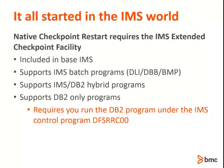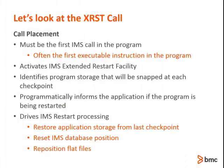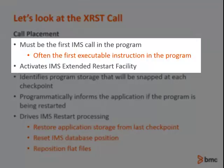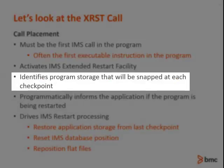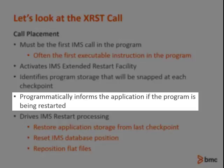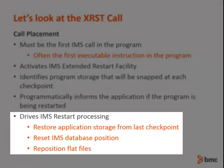Now let's look at the various calls that are used for IMS Extended Restart. The XRST call, or Restart call, is where it all begins. It must be the first IMS call issued by the application — many times the first instruction of the entire program. The XRST call indicates that this program is a checkpoint restartable program. For normal executions, it will identify the important parts of application storage that will be snapped at each checkpoint. In the event of a restart, the XRST call can programmatically inform the application that it is being restarted, allowing the program to branch around some logic. Additionally, the placement of the XRST call dictates when IMS restart processing will actually occur, including restoring tagged application data to the state of the most recent checkpoint, repositioning IMS databases, and repositioning GSAM sequential files. After the XRST call executes, the program continues with the next sequential instruction.